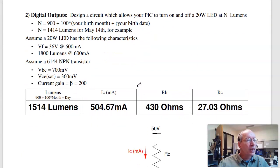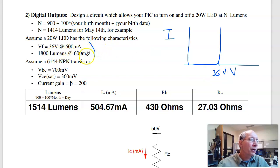On problem number two, come up with a circuit that lets a PIC drive a 20 watt LED. So here's the specs on the LED: 36 volts at 600 milliamps. This is a diode, so the VI characteristics kind of look like this. The voltage is roughly 36 volts anytime you have current flow.